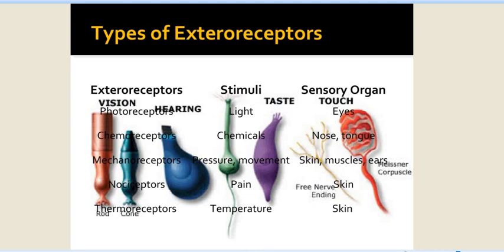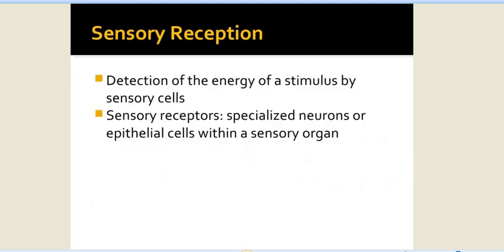These are the types of exteroceptors: for vision, photoreceptors; chemoreceptors; mechanoreceptors; nociceptors; and thermoreceptors. They detect light and chemical, pressure, movement, pain, and temperature information. There are sensory organ receptors for taste and touch through the eyes, tongue, and skin.